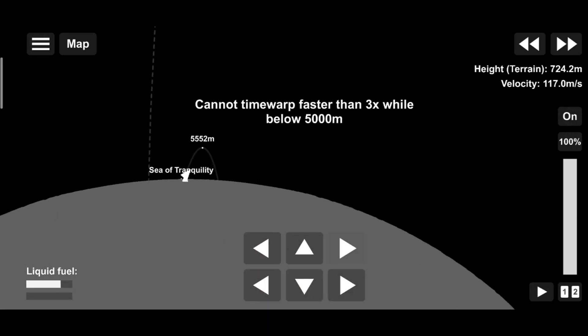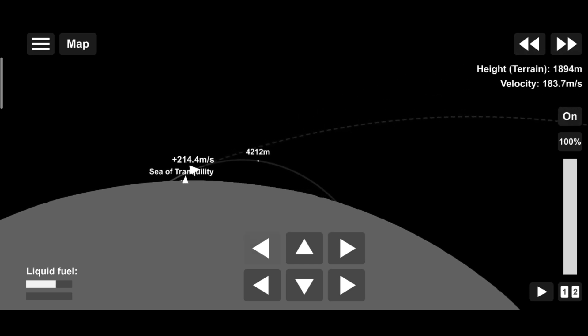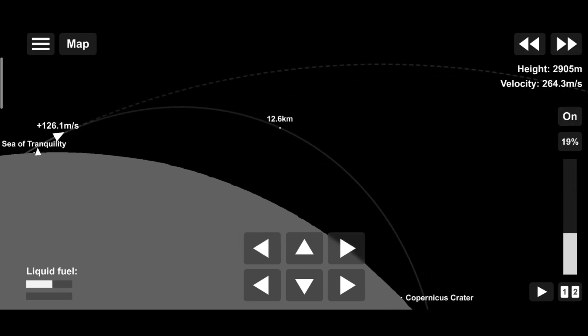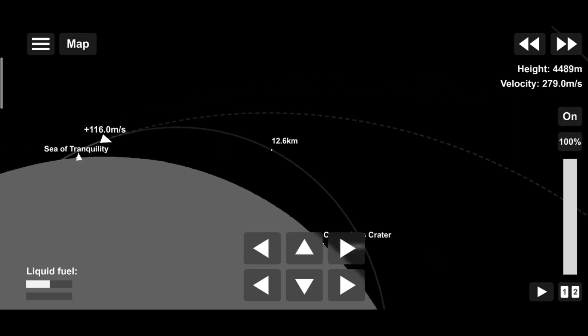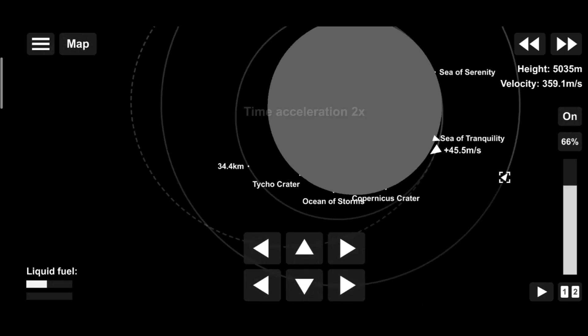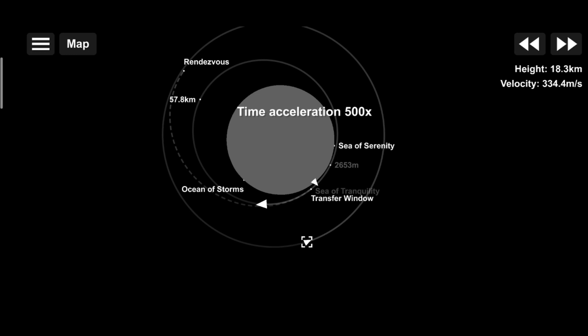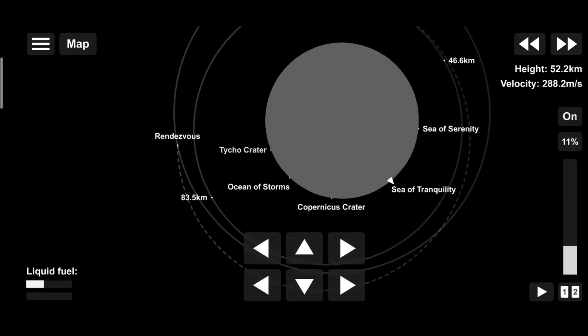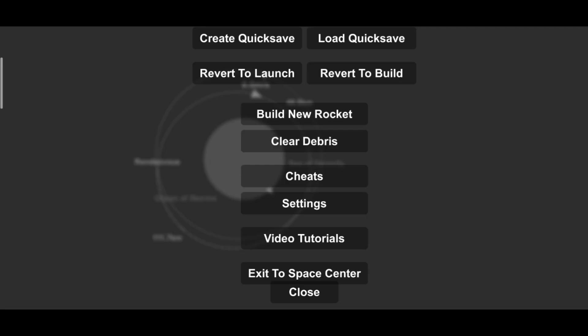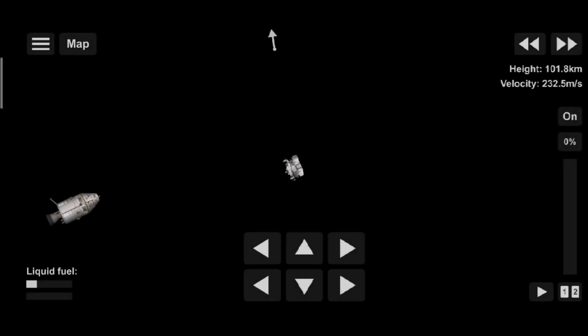This is Apollo control on the terminal phase maneuver, in which the crew of Eagle will thrust along the line of sight toward Columbia. Distance now between the two spacecraft, some 38.6 nautical miles. Closing at a rate of 110 feet per second.